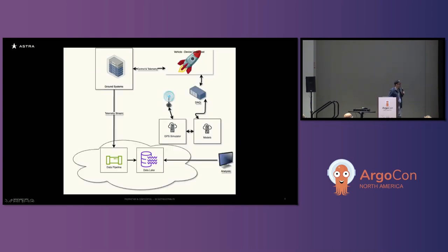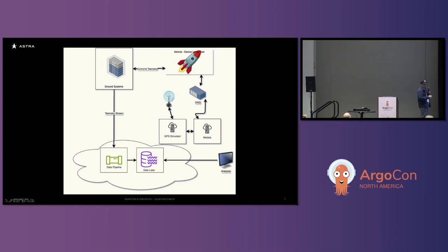It gets more complicated in our case because we have additional things to orchestrate. We have our ground system software and computers used before the rocket takes off, our cloud data pipeline where we ingest telemetry data for analysis, and in addition to the DAC hardware, we also have a GPS simulator that needs to be orchestrated. The GPS simulator is hooked up to the models and sends spoofed GPS signals to the vehicle to convince it that everything is nominal. All of this needs to be orchestrated so that we can automate deployments to this system.